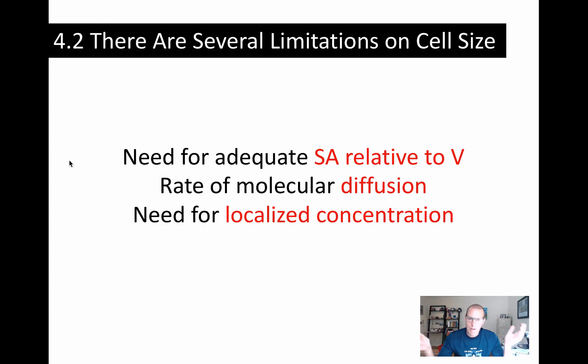But despite those kind of extremes on each end of the spectrum, cells tend to fall into a predictable size range. So bacteria, they're normally like 1 micrometer to 5 micrometers in length. E. coli standard bacteria is about 2 micrometers in length.